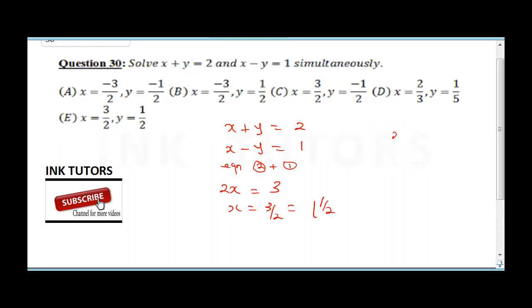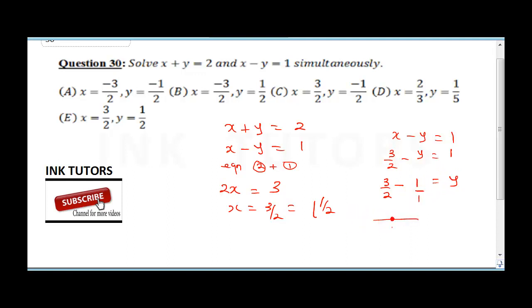From x minus y equals 1, substituting x as 3 over 2: 3 over 2 minus y equals 1. Collecting like terms, using LCM of 2: 3 over 2 minus 2 over 2 equals y, so 3 minus 2 over 2 gives y equals 1 over 2.